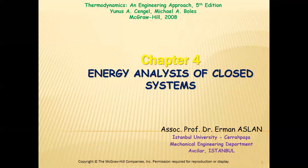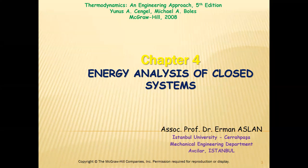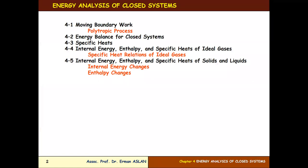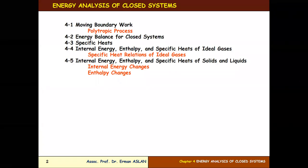Now we start Chapter 4: energy analysis of closed systems, which is the thermodynamic first law for closed systems. First, what is a closed system? The chapter contents include: moving boundary work, polytropic processes, energy balance for closed systems, specific heat, and internal energy and enthalpy of ideal gases.